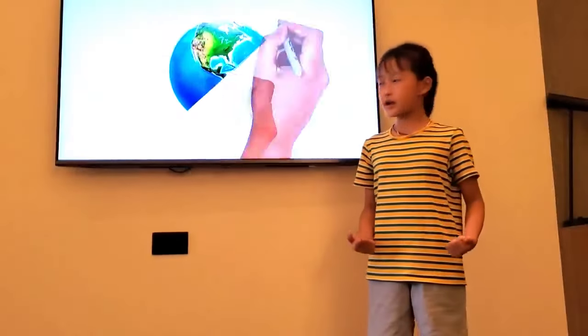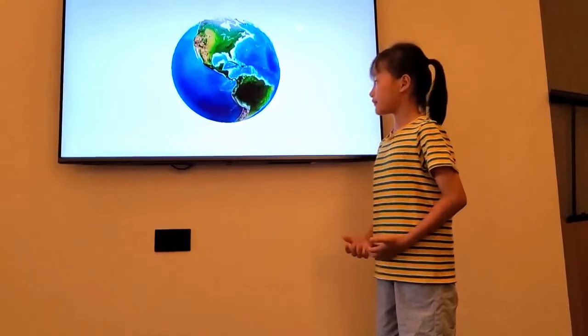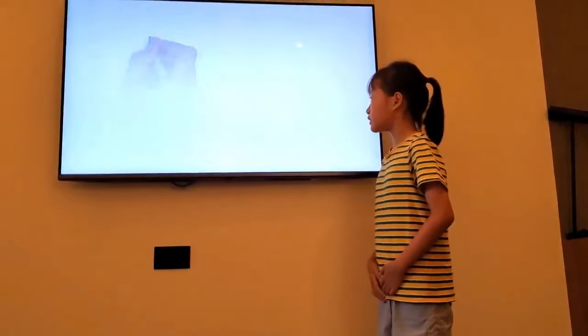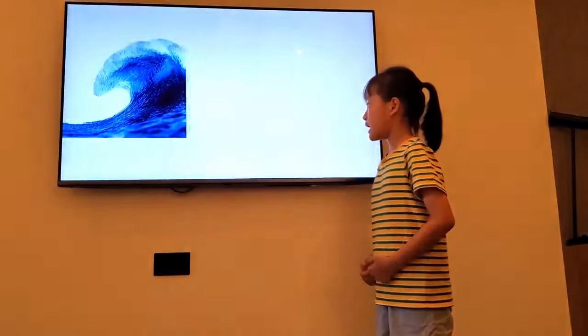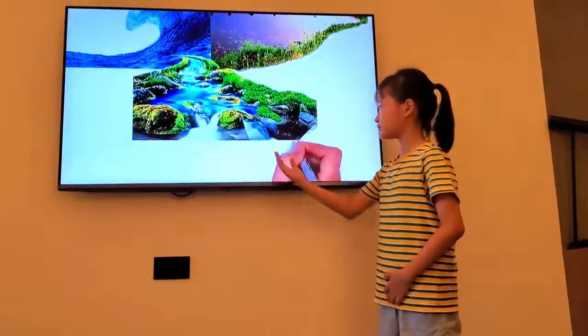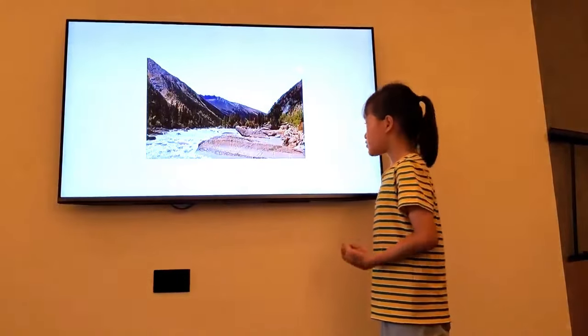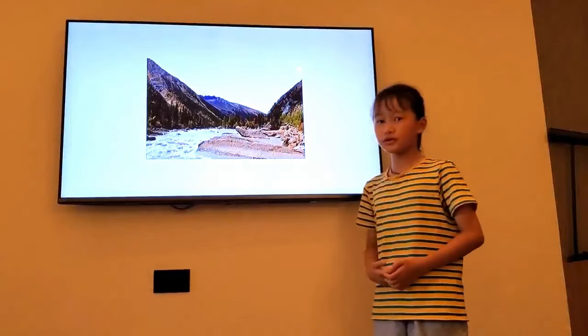Let's move on to water on Earth. Most of Earth's water is in oceans, lakes and rivers. Most rivers come from mountains and go to the oceans.